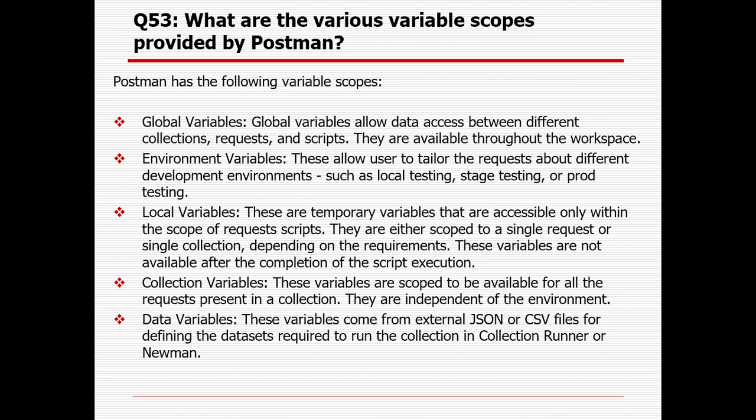Local variables are temporary variables accessible only within the scope of the request script. They are scoped to a single request or single collection depending on the requirement, and are not available after the completion of the test script execution. Collection variables are scoped to be available for all requests present in a collection and are independent of the environment. Data variables come from external JSON or CSV files for defining the dataset required to run the collection in Collection Runner or Newman.